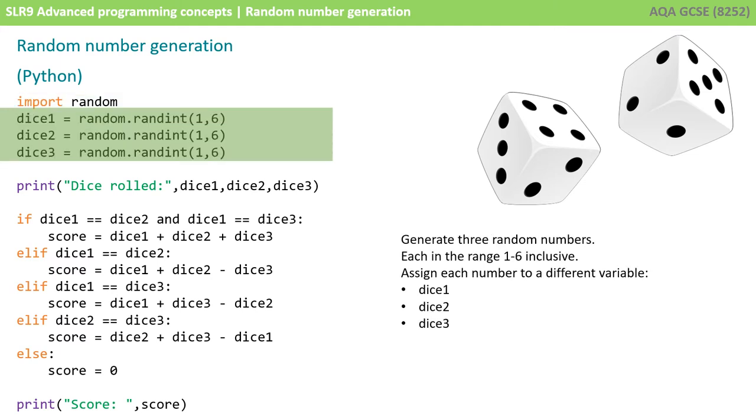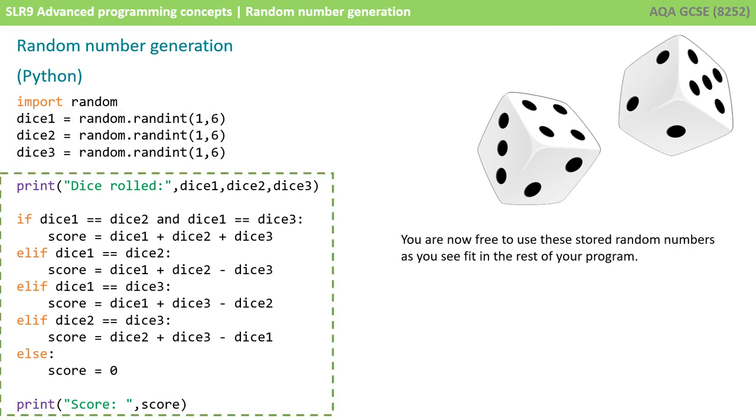The next three lines then generate three random numbers, and this will be different based on the programming language you're using, but in Python the lines of code we have here generate numbers in the range 1 to 6 inclusive, so we're simulating the roll of a dice, and it assigns each of those numbers to a separate variable. You're now free to use those stored random numbers as you see fit in the rest of the program.